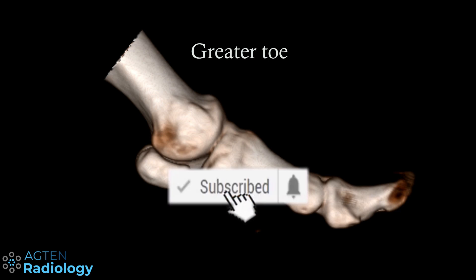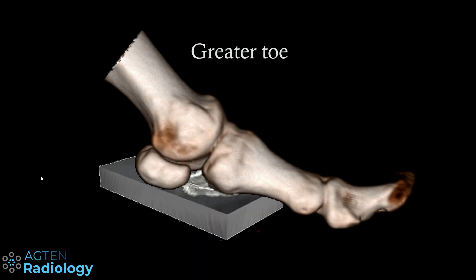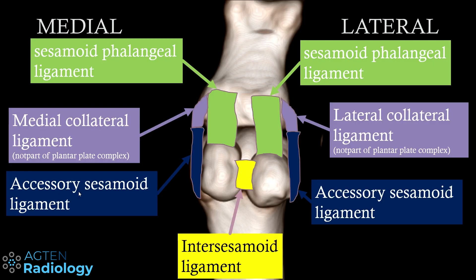When you start out with MSK and you have a great toe and the query is plantar plate tear, typically you just deal with the plantar plate as one structure — at least I did in the beginning, and it's a little bit more tricky than that. The plantar plate complex is a collection of different structures that are all supporting the plantar aspect of the metatarsophalangeal joint, helping to distribute forces. It's not just one structure, and that's very important to understand. The goal today is to show you that you should be able to call these different structures out and say where the pathology actually is.